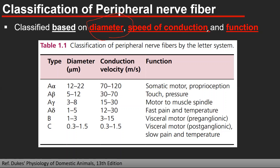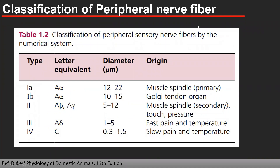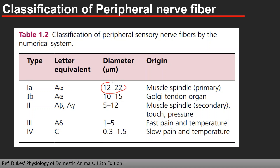Based on function, sensory neurons are given a numerical classification from Type I to Type IV. Type I-A neurons are heavily myelinated and have the largest diameter. Type IV neurons are C fibers — non-myelinated with slow conduction velocity. These sensory neurons bring information from many tissues to the CNS. These are the classifications of peripheral nerve fibers based on their diameter, speed of conduction, and function.